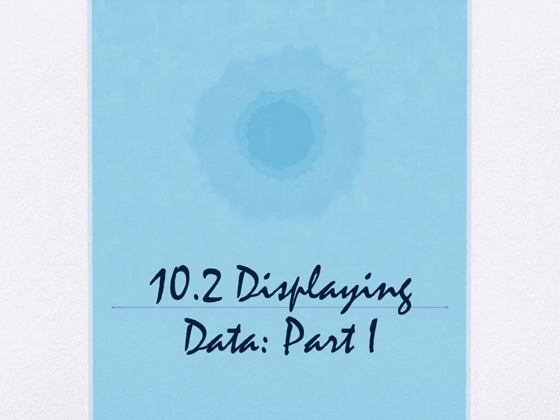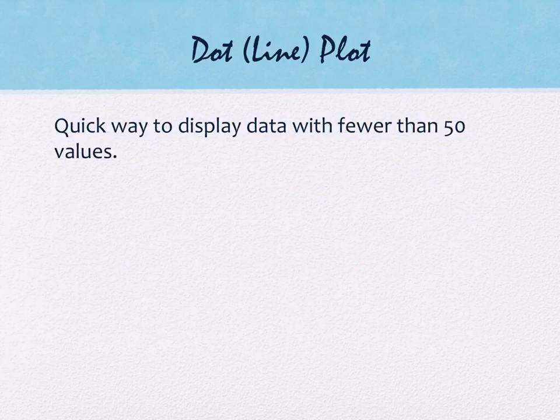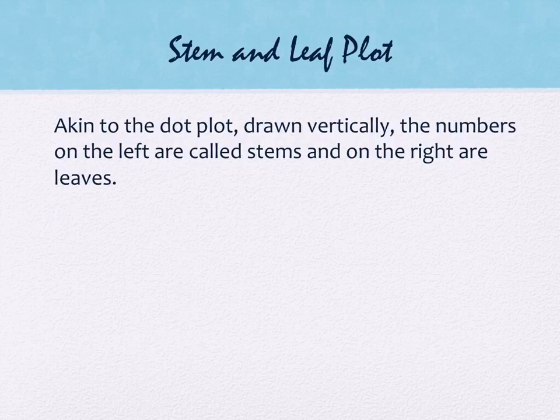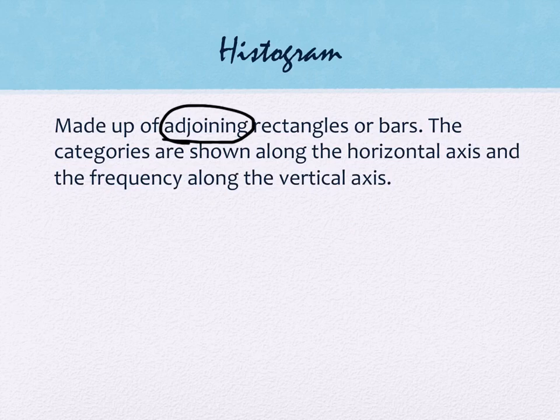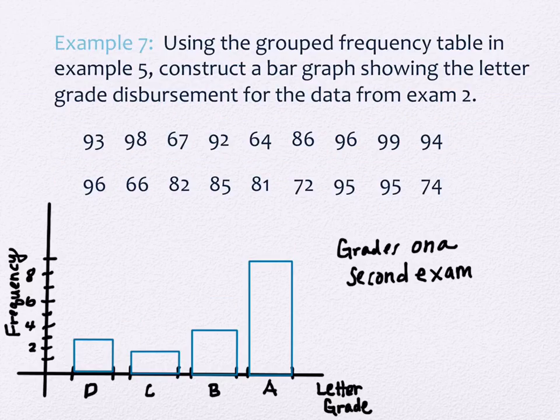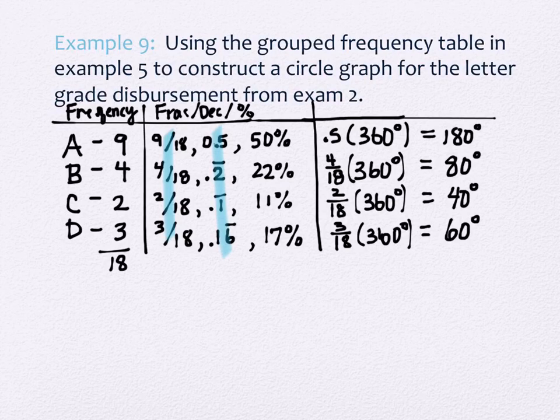Alright, so last time we were looking at section 10.2, we almost finished it. We got to the point where we were going to do a pie chart, sometimes called a circle graph. And we had all of this data, which was wonderful, but we didn't have the protractors with us and we ran out of time anyway, so it worked out okay.